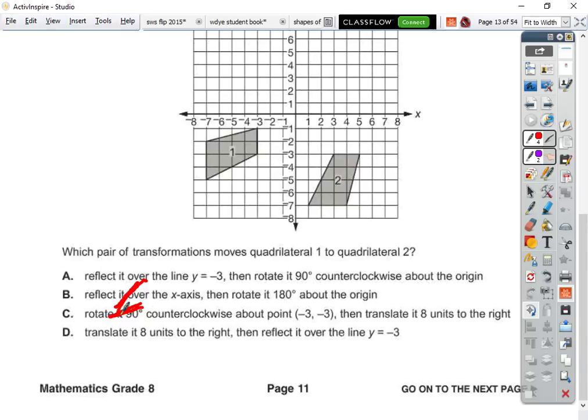So it's either A or D. So let's look what they say. Reflect it over the line y equals negative three. So y equals negative three is going to be this line right here. So if I reflect it over that angle, I'll end up with a shape that comes down here and up here. And it looks something like this. And then it says rotate it 90 degrees. If I rotate it 90 degrees counterclockwise, that would swing it up here. That actually might be the one.